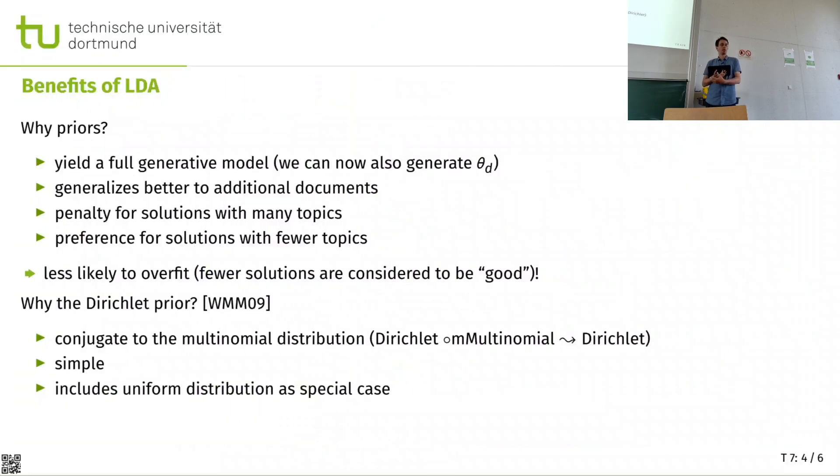So what are the benefits of adding this to LDA? Well, it yields what is called a full generative model. Because now we can also generate the topic distributions and the word distributions of a new topic. And that is beneficial for analyzing unseen documents. So it generalizes better to additional data. It has this penalty for solutions that have many topics in the same documents. They are considered to be worse. So we kind of push that model to produce smart assignments and similar for the word distributions. And that is why it's sometimes considered to be less likely to overfit to the data. Because certain solutions are not plausible that may be too biased towards the single documents.